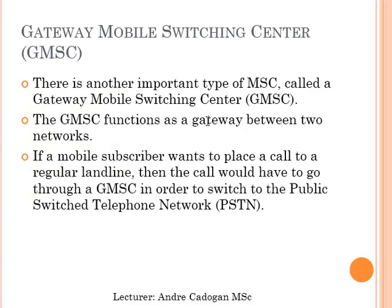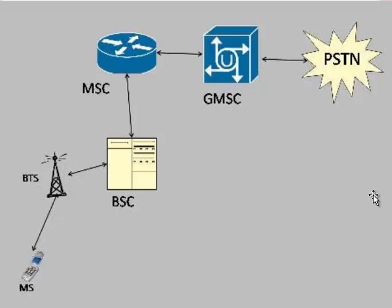There is a gateway mobile switching center, the GMSC, which is another important type of mobile switching center that functions between two networks. If a mobile subscriber wants to place a call to a regular landline, the call would have to go through the gateway mobile switching center in order to switch to the public switching telephone network. The mobile switching center communicates with the gateway mobile switching center to route calls to the PSTN network.